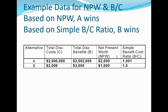Welcome back to CE528. I want to pick up our thread from the example we were discussing at the end of last week's lecture. I showed you this very extreme example where there are two alternatives that differ vastly between their initial cost and their total benefits. Comparing the two in terms of net present worth, it's very clear that alternative A has higher net present worth. But if you look at the simple benefit cost ratio approach, alternative B has a clear advantage.